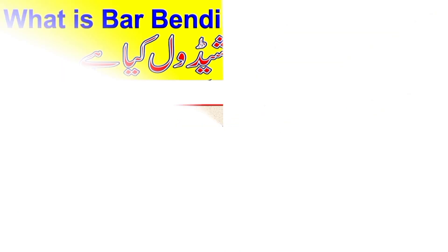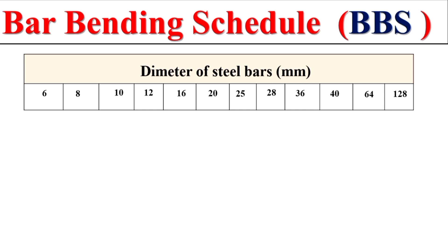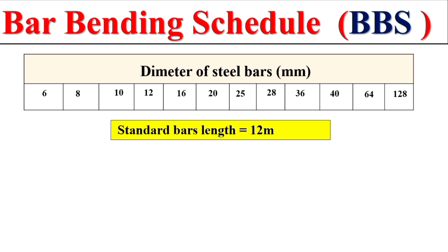To properly understand Bar Bending Schedule, there are some basic things that are very important to understand. If we have to calculate the Bar Bending Schedule, we first need to know the diameter being used in construction. Normally we use either 6mm bar or greater than 6mm bar. The total length of a standard bar is 12 meters or 40 feet.